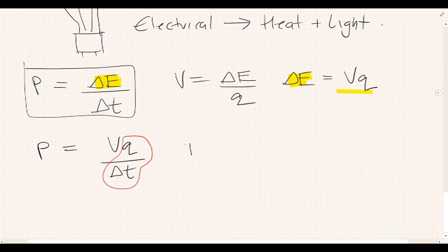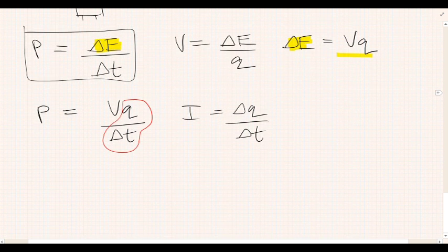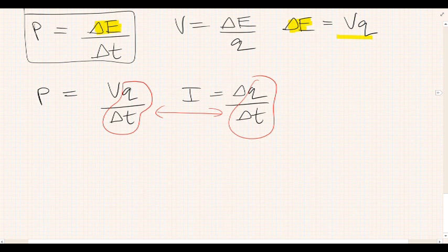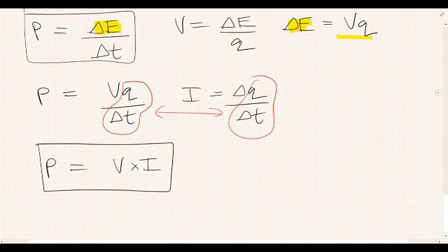If you remember from before, current is the rate at which charge flows in a circuit, so charge per second, which means that we can replace the Q over T with current. So, power becomes V times I, and that is another formula that you're going to need to be able to work with.